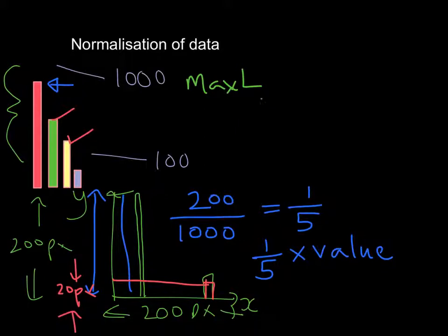What you then want to do is divide that by your largest value of your data set. So let's call this one max V for the data set. This will give you a normalisation factor, which we're just going to call NF.